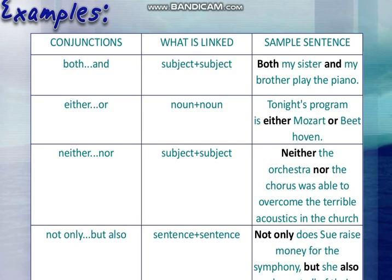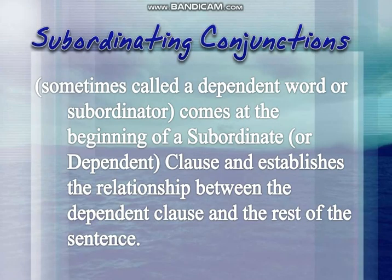Then we have subordinating conjunctions, sometimes called a dependent word or subordinator. It comes at the beginning of a subordinate or dependent clause. A dependent clause depends on the main clause — it cannot stand alone; it needs the main clause to complete its meaning. The subordinating conjunction establishes the relationship between the dependent clause and the rest of the sentence.